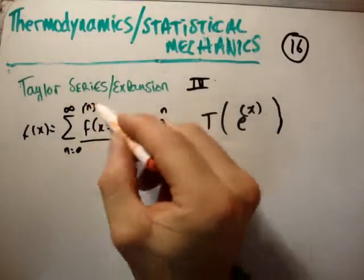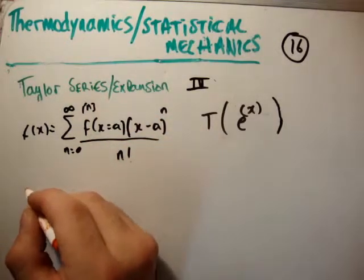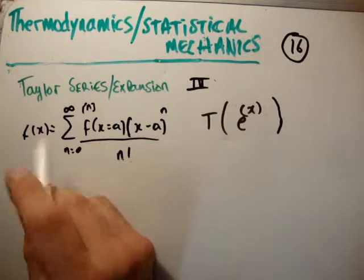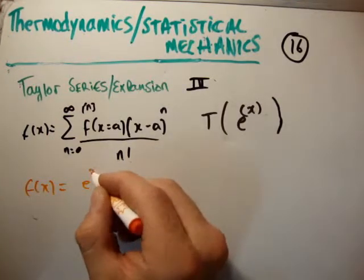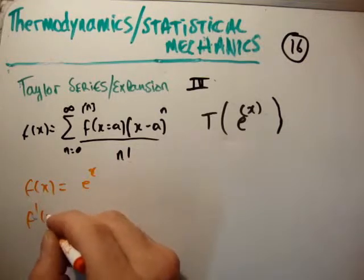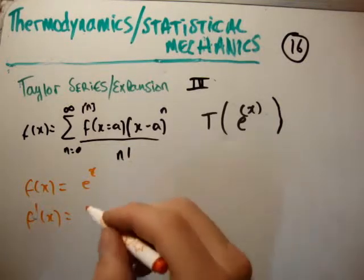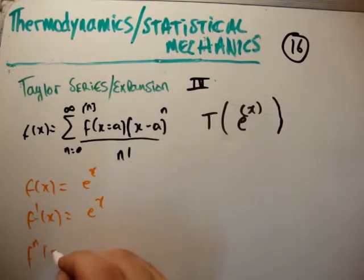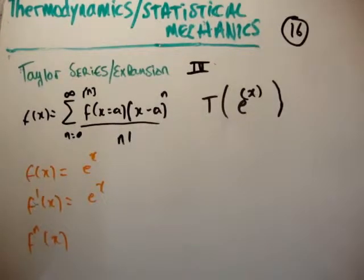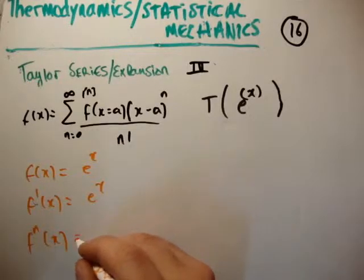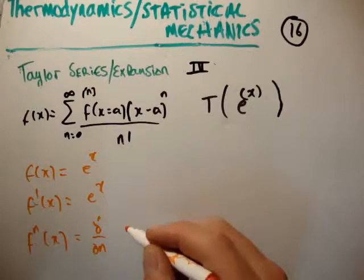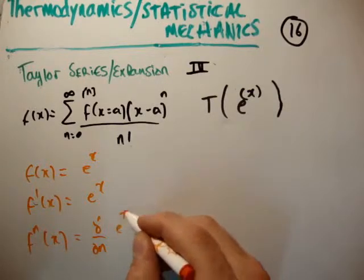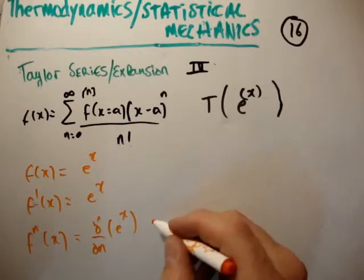So we need the derivatives because we need to get the n-th derivatives here. So f of x is equal to e to the x. f prime of x, or the first derivative of x, is also e to the x. So we know that the exponential function has the property where the n-th derivative is this.